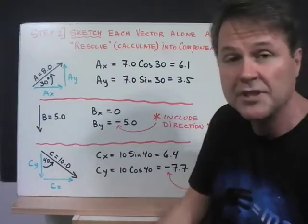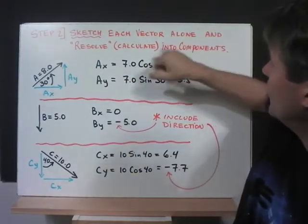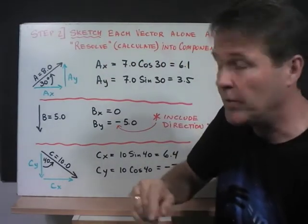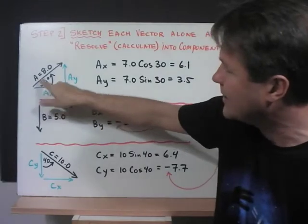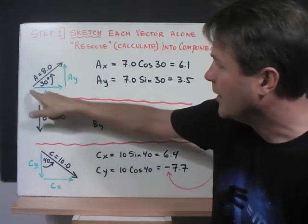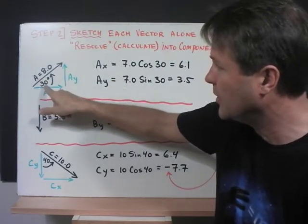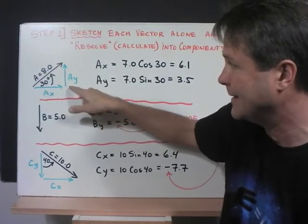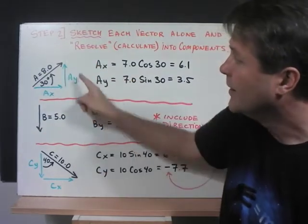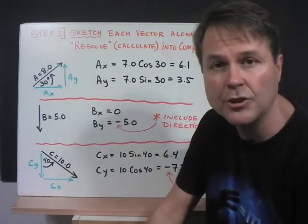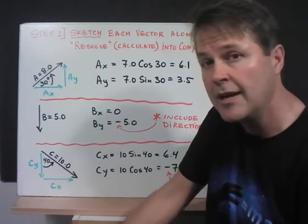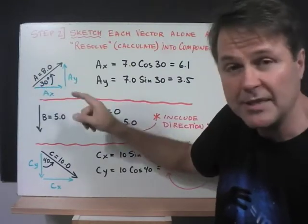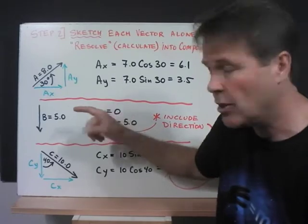So in step two, sketch each vector alone and resolve into components, calculate the components. So A is 8 meters long and we know it's 30 degrees north of the east line. So we'll draw the AX like this and AY there. It's important that you sketch the vectors alone so that way you can identify exactly where that angle is because you're going to have to make some decisions using SOH CAH TOA.